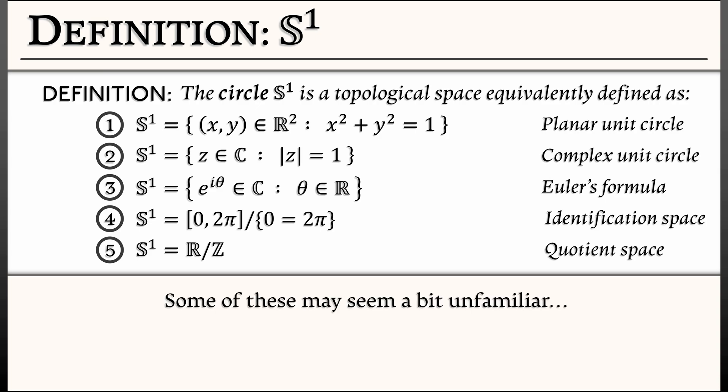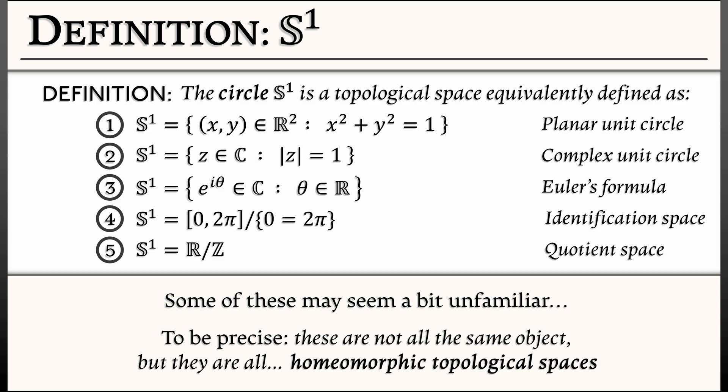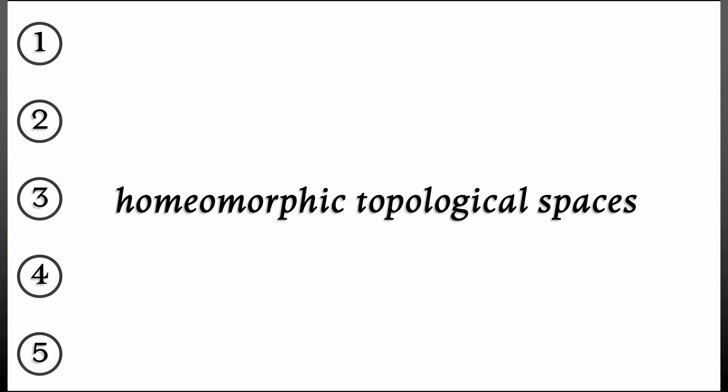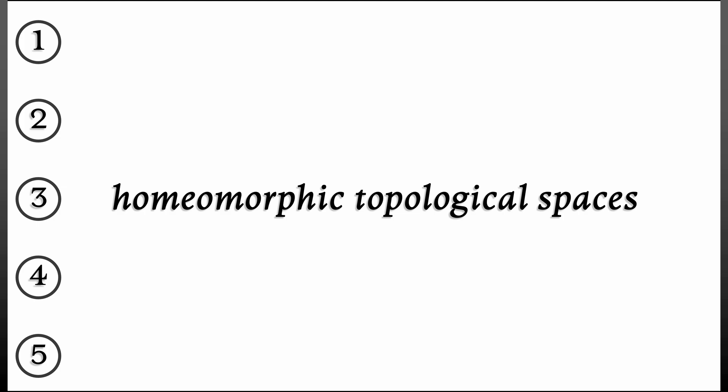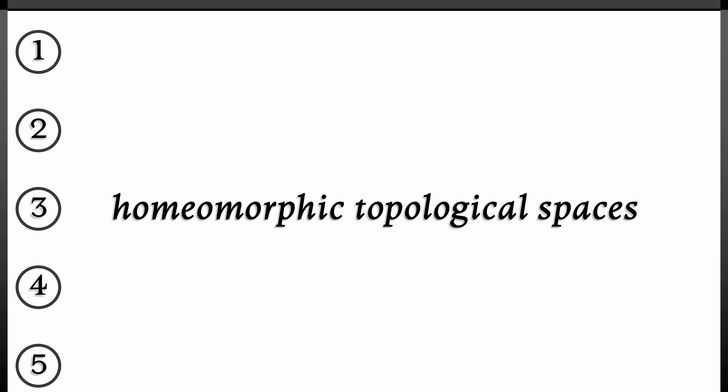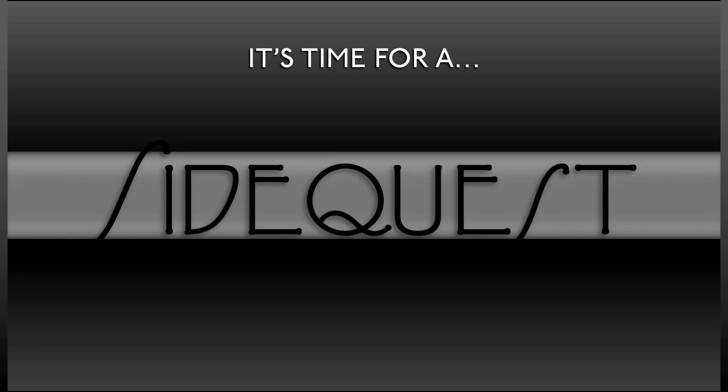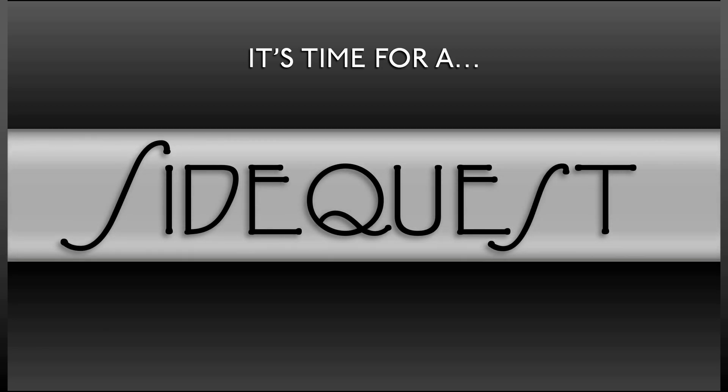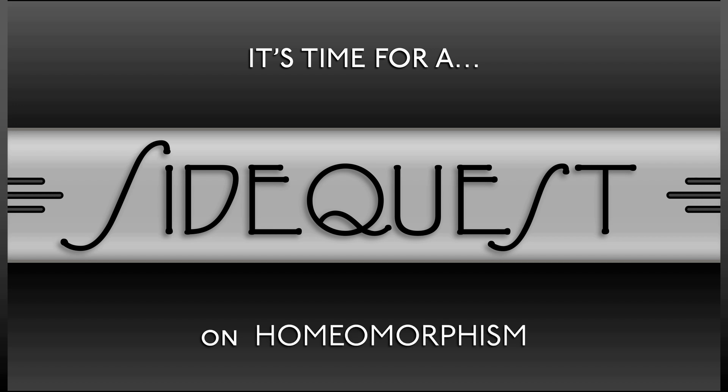Now, some of these look different than others, but they're really all the same. Well, I have to be a little more precise here. These are not all the same objects, but they are all homeomorphic topological spaces. Wow, those are three big words there. It's going to take a little bit of effort to unpack them. In fact, it's going to take a side quest on topology and homeomorphism.